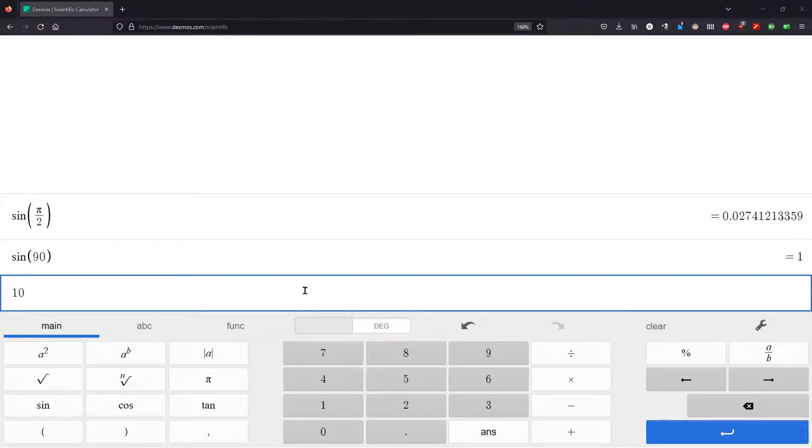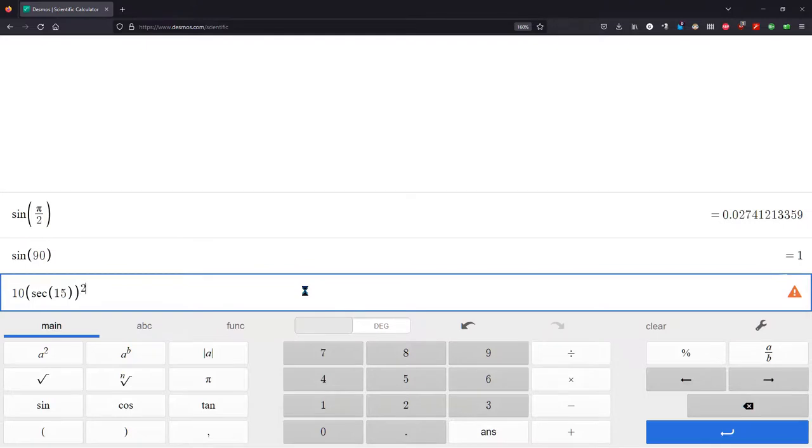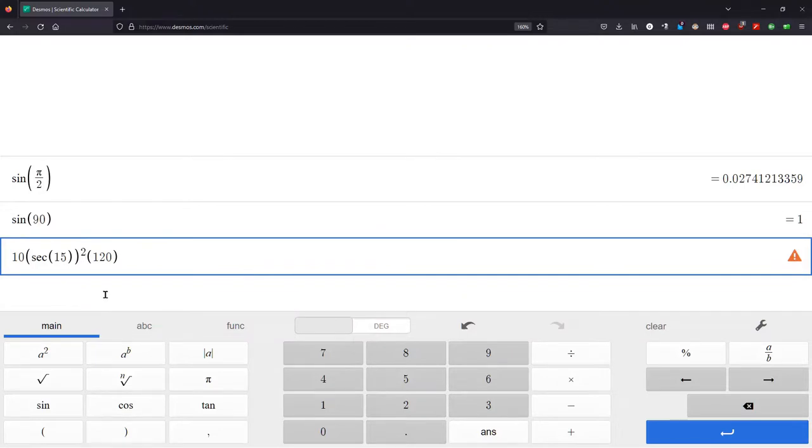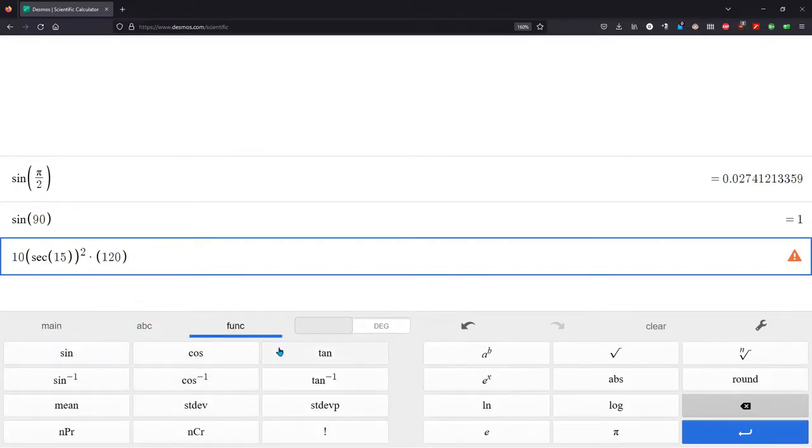And let's see if I can remember. It's 10 secant of 15 squared. Something else times 120. Uh-oh. What's wrong? I need to put an asterisk maybe. Secant. What's going on? Function. Do we not? Alright. We don't have secant. So when you don't have secant, secant is 1 over cosine. So we'll go with cos.